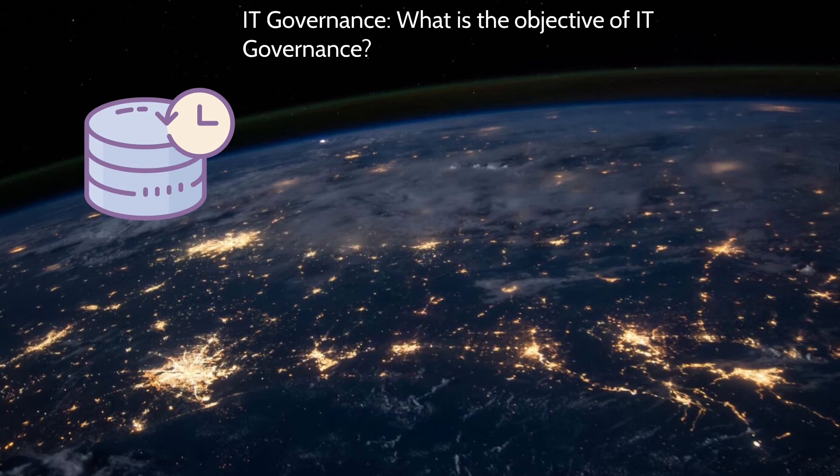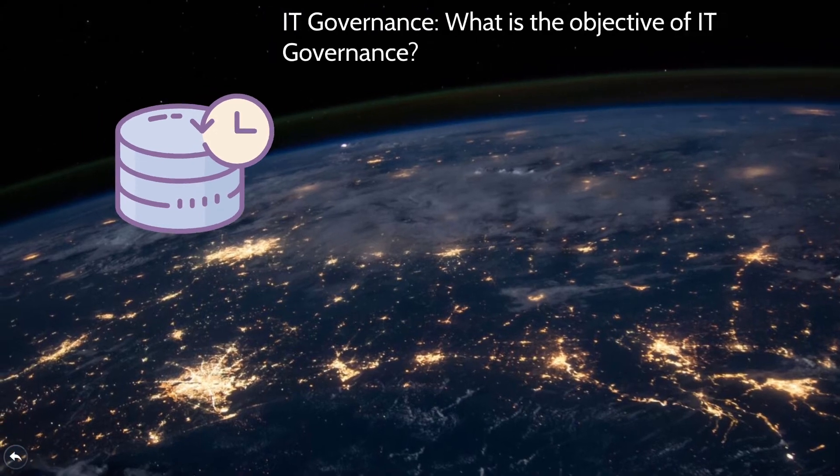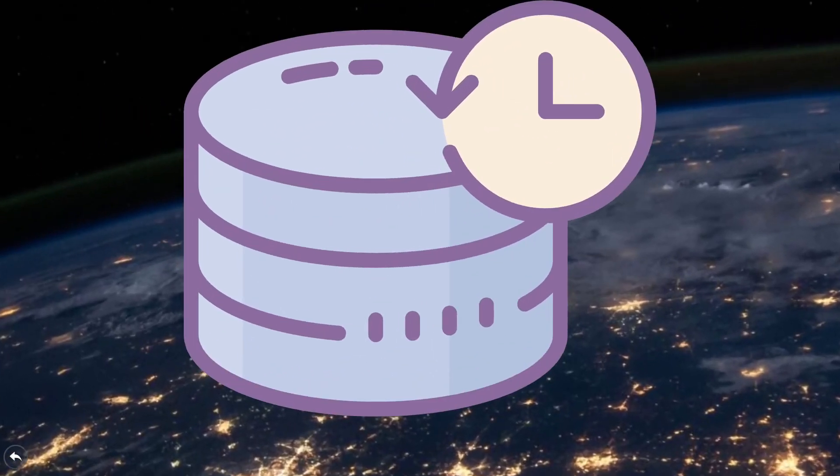Also, some data should be conformed, predictable, very accurate, certified quality, and subsequently highly governed. The first step towards achieving the objectives of data governance is looking at the data differently.